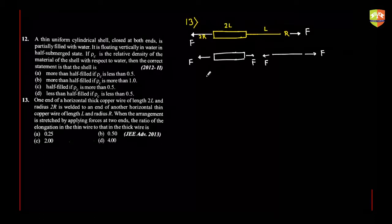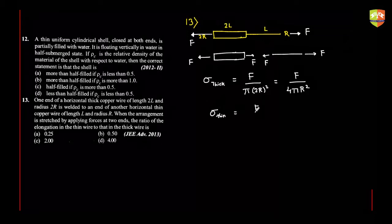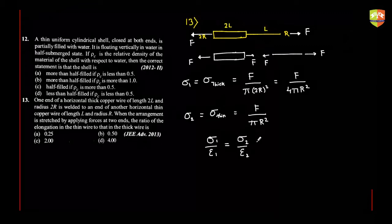The stress in the thick wire equals force divided by pi times (2R)², which is F divided by 4 pi R². The stress of the thin wire is F divided by pi R². Since stress by strain is constant — Young's modulus — sigma1 by epsilon1 equals sigma2 by epsilon2. So epsilon1 divided by epsilon2 equals sigma1 by sigma2, which is 1 by 4.